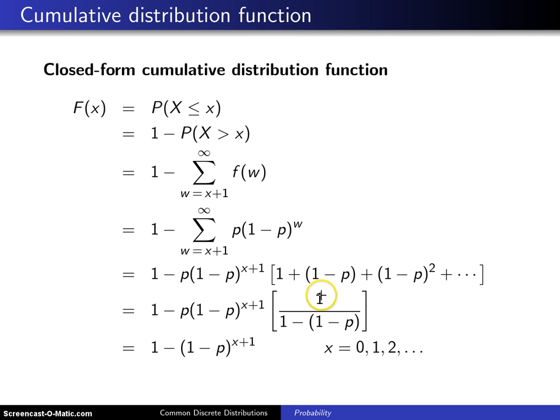This will converge to 1 over 1 minus the common ratio. And so when you look at this denominator, that will just be P. So if you have a P in the denominator, that will cancel with this P right there, which leaves you just 1 minus 1 minus P raised to the X plus 1 power on its support.